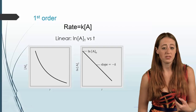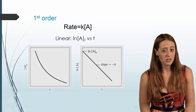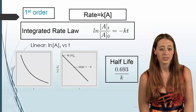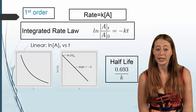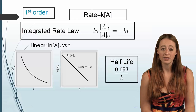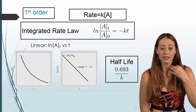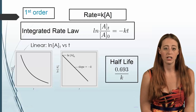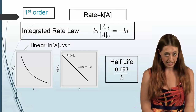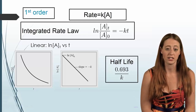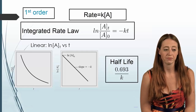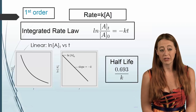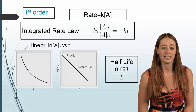Let's do a quick summary of everything we've just talked about. We have our rate law: rate equals k times the concentration of A. We have our integrated rate law, which is the natural log of [A]t over [A]0 equals negative kT. If we just graph this, we get a natural logarithm graph, which is not particularly easy to deal with, and so instead we will often graph the natural log of A versus T.